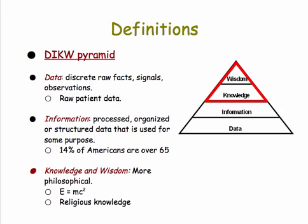At the top two levels, we have knowledge and wisdom. These are familiar terms, but they're more philosophical in nature and there's less consensus about exactly what they mean. Although we might count E equals MC squared, Einstein's famous equation, as a form of knowledge. Religious knowledge is another form, and there are many others. These are based on information, but somehow they go beyond it in some way.